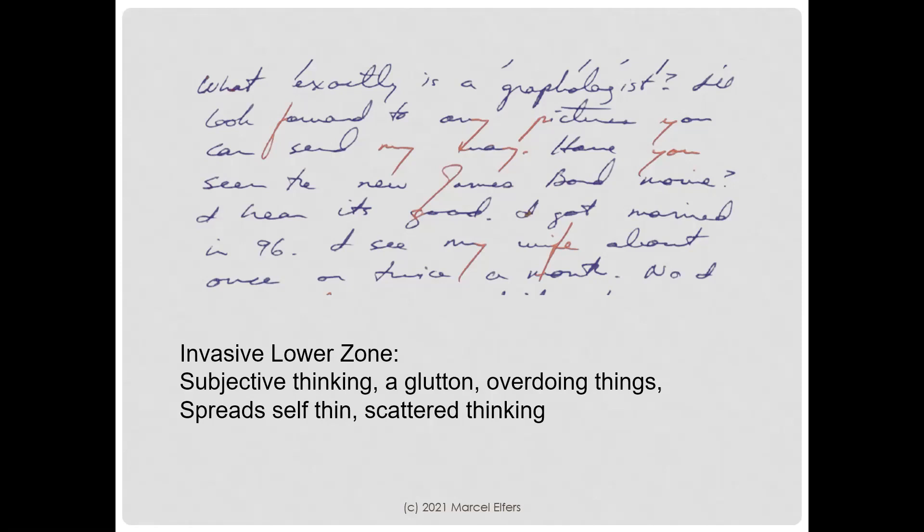These long and heavy down strokes are called an invasive lower zone. What we see is a very long down stroke that goes through the next line — that's called an invasive lower zone. This implies subjective thinking, being a glutton, somebody that overdoes things, spreading themselves thin with too many tasks and never finishing one because they jump from one to the next, and scattered thinking.